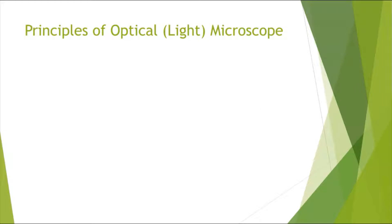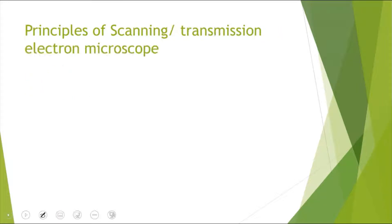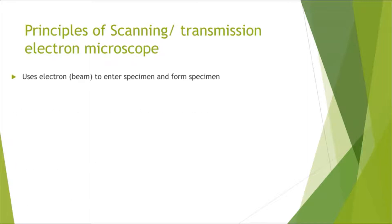The principles of the optical or light microscope: it uses light to form an image and focuses using lenses. The principles of the scanning or transmission electron microscope are similar — instead of light, they use an electron beam which enters the specimen and forms an image.